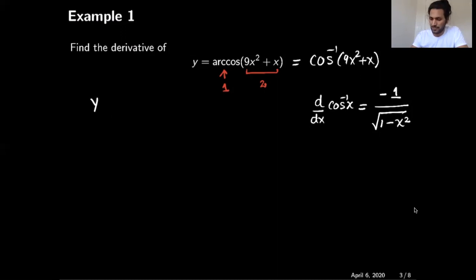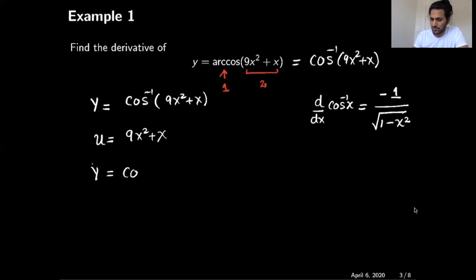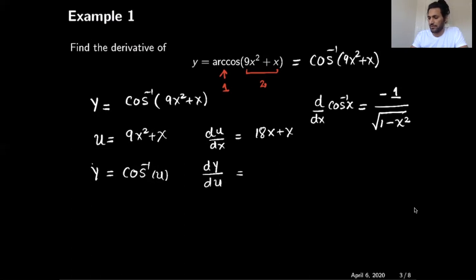Let's see how we will do that. We have y equal to cosine inverse of 9x squared plus x. If I take u equal to the inside function, which is 9x squared plus x, then y will become cosine inverse of u. Then I will calculate the derivative of u with respect to x, which is 18x plus 1, and I will calculate the derivative of y with respect to u, which by using the formula is minus 1 divided by the square root of 1 minus u squared.